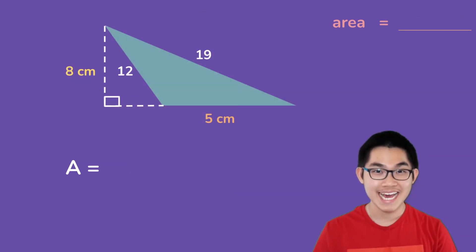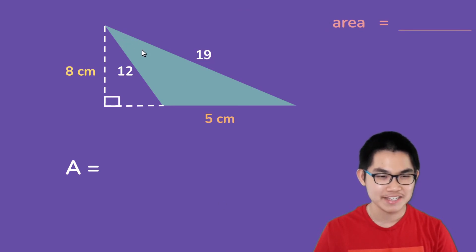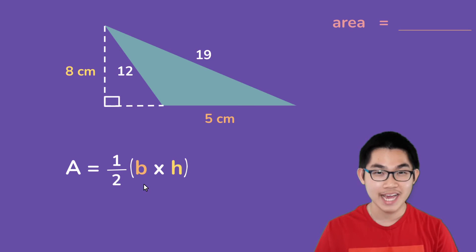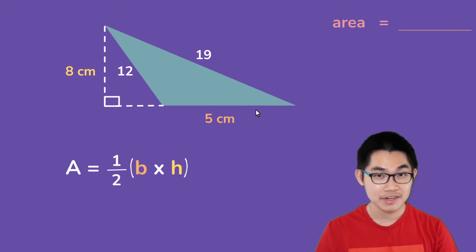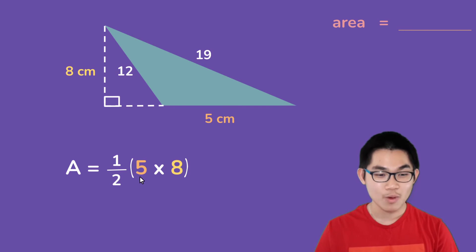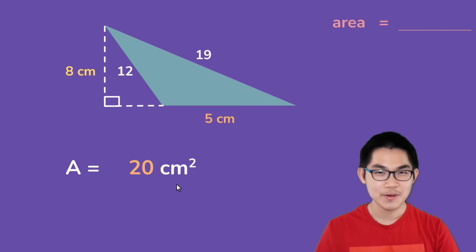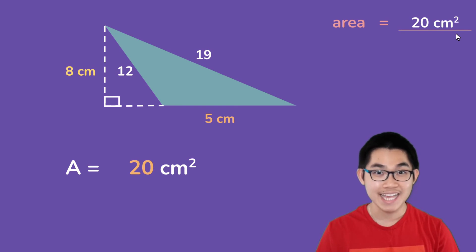Let's do one last problem for today. What is the area for this blue slash green triangle? Well, if you remember, the area is just one half times the base times the height. The base is 5 centimeters and the height is 8 centimeters. 5 times 8 gives you 40, and 40 divided by 2 is 20 centimeters squared. So the area of this blue triangle is 20 centimeters squared. And that is our answer.